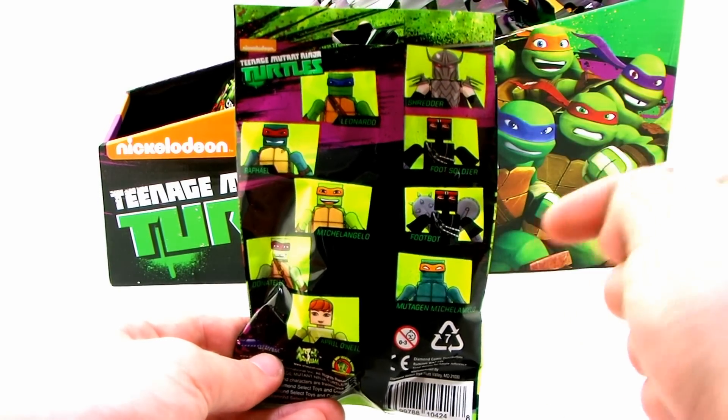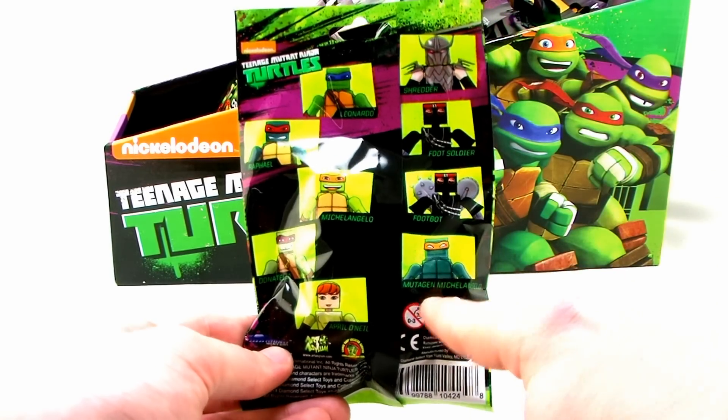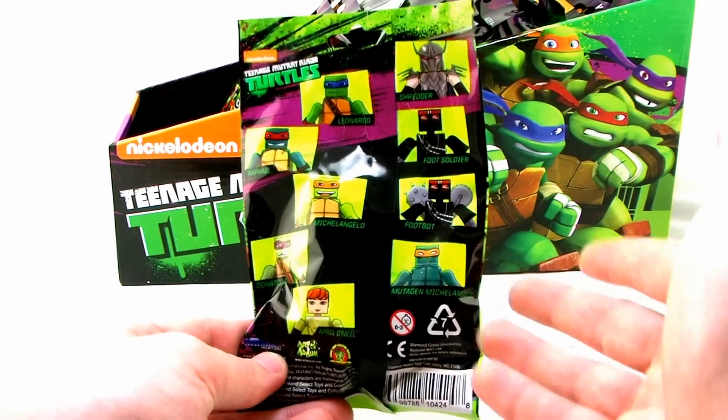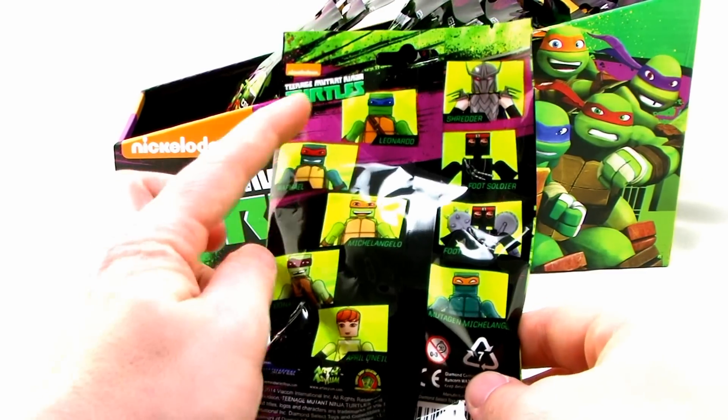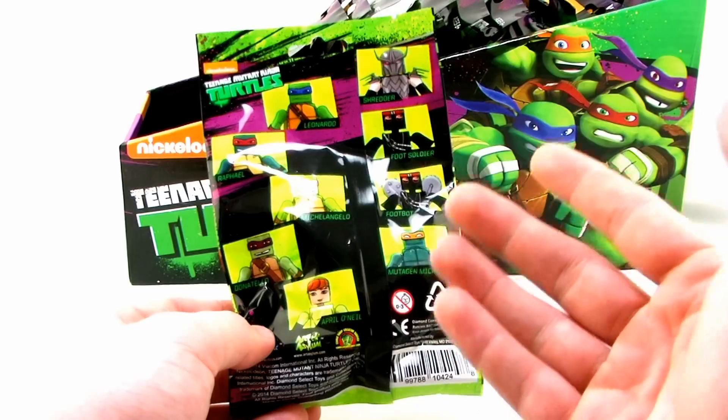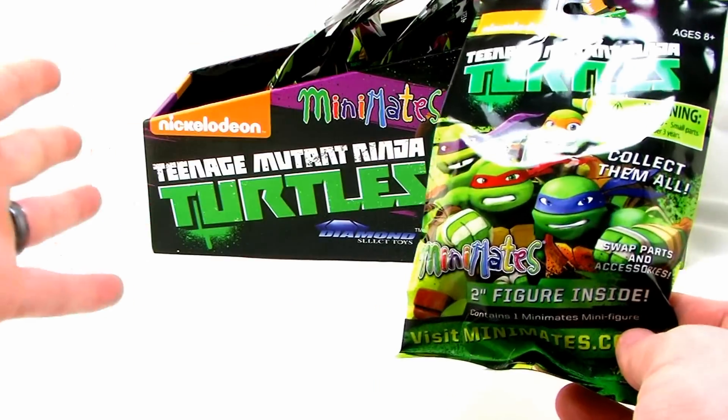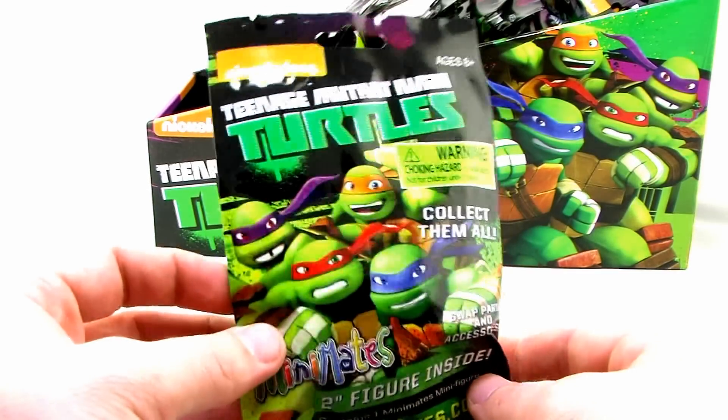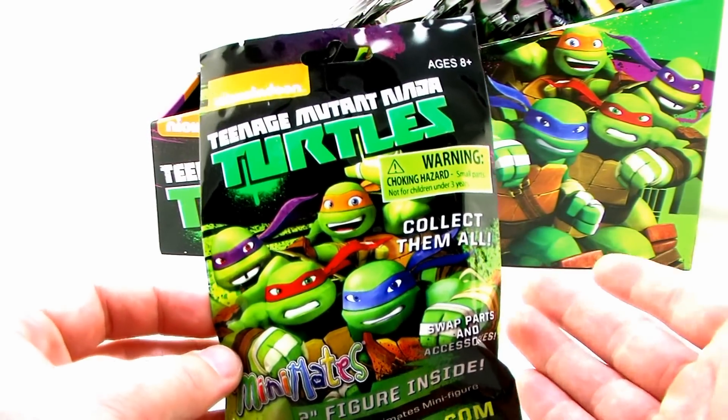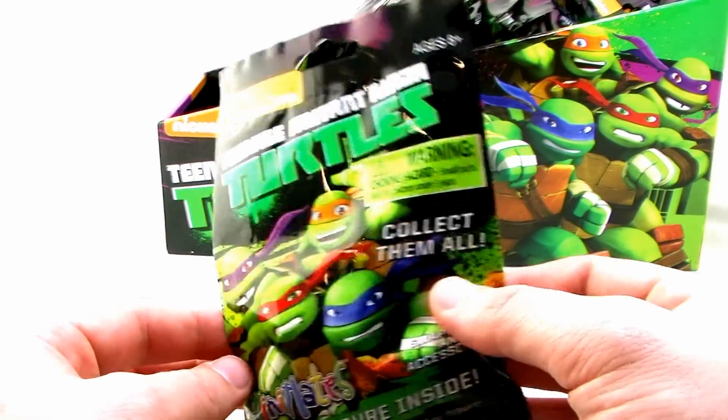So there's nine different figures that include Shredder, two different foot soldiers and Mutagen Michelangelo, which is a very cool chase type figure. So nine different figures are available. I have 17 bags. I'm hoping that means that since I bought an entire store countertop display that I'll get all nine of the Mini Mates. So we're going to go ahead and just open up all these bags and we're going to check out these little figures one by one until I get all nine of them, hopefully.